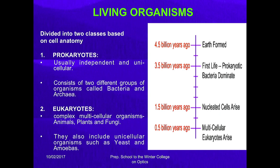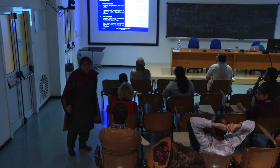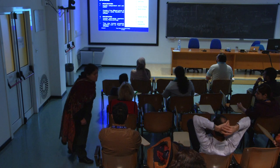Life started almost 4 billion years ago. The first living things were bacteria, around 3.5 billion years ago. We divide living organisms into two classes: prokaryotes and eukaryotes. Prokaryotes are usually independent and unicellular. The main difference between prokaryotes and eukaryotes is that prokaryotes do not have a nucleus. Eukaryotes are complex multicellular organisms — animals, plants, and fungi are part of eukaryotes. They also include unicellular organisms such as yeast and amoeba.